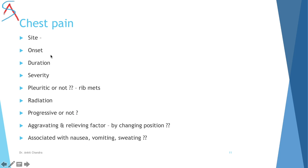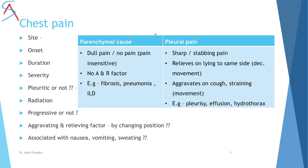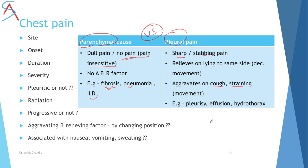Ask about chest pain and differentiate parenchymal from pleural causes. Parenchymal disease generally has no pain, as the parenchyma is pain-insensitive and there are no aggravating or relieving factors; examples include fibrosis, pneumonia, and interstitial lung disease. Pleural disease causes sharp, stabbing, or shooting pain that is relieved by lying on the same side (reducing movement) and aggravated by coughing or straining; examples include pleurisy and pleural effusion.